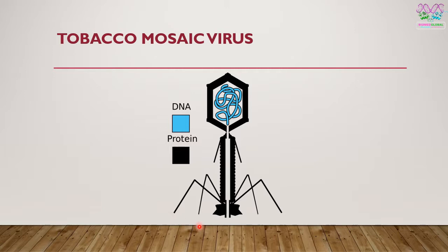Here is the current known structure of the tobacco mosaic virus. It has genomic material — DNA — and a capsid protein that protects the genetic material. However, its structure is very complex and it is also known as a complex virus. We will be discussing the structures of viruses in another video.